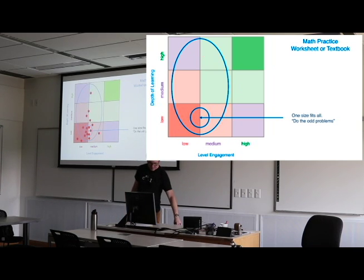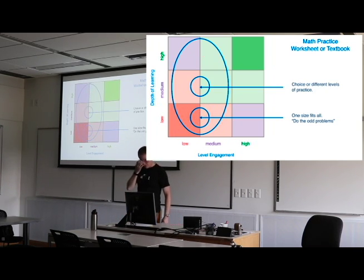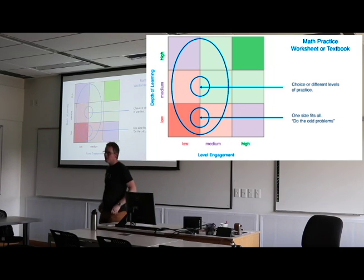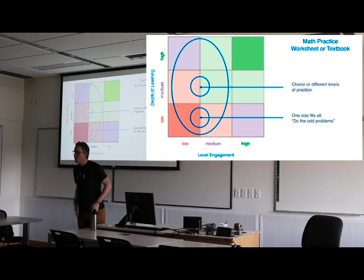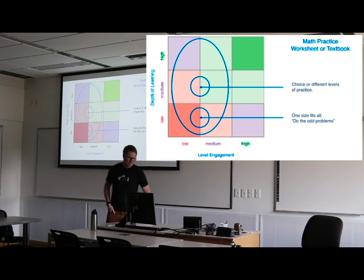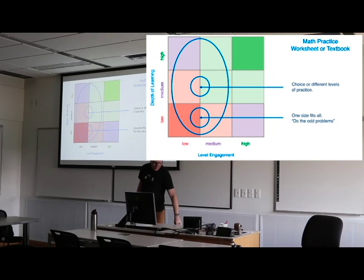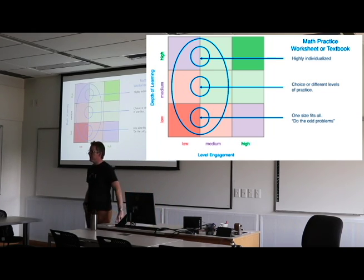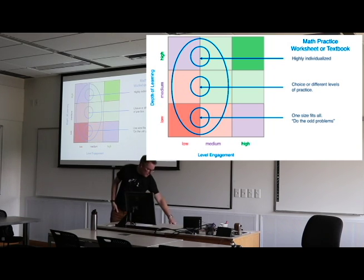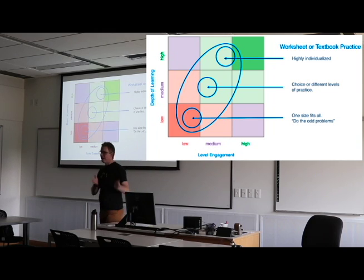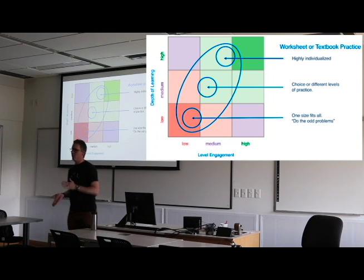So what would you do about that model? Well, another way you can do it is you can have different levels of practice. That's one solution. In fact, you can have choice, things like that. Really, the only way to really make that high depth of learning, it's going to have to be pretty highly individualized, which is really hard to do. Really hard to do. But if you can pull it off, the advantage is it actually kind of skews it and actually the engagement goes up.